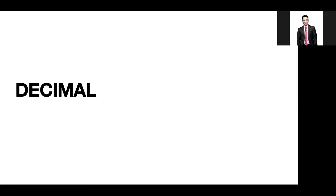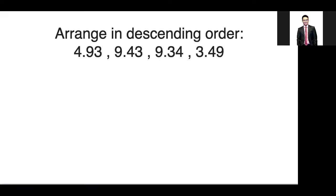Hello, today we will start a review on different concepts on decimals. Let's try the first question: arrange the following in descending order. For this one, we need to look first at the highest place value. In this example, we will look at the ones place, so it's 4, 9, 9, and 3.